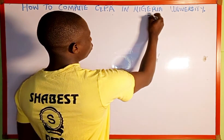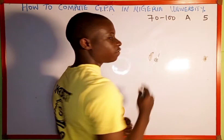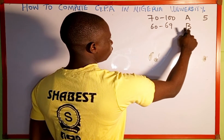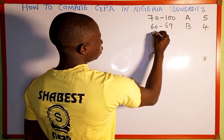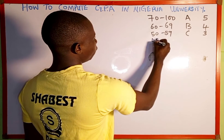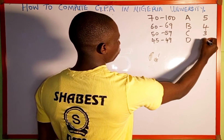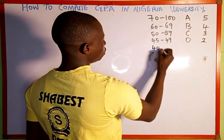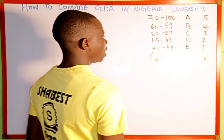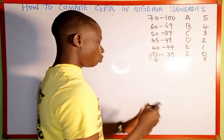When you score between 70 to 100, the letter grade is A and the grade point is 5. When you score between 60 to 69, the letter grade is B and the grade point is 4. When you score 50 to 59, the letter grade is C and the grade point is 3. When you score between 45 to 49, the letter grade is D and the grade point is 2. When you score between 40 to 44, the grade point is 1. And when you score between 0 to 39, it is F, which means you have failed the course, and the grade point is 0.